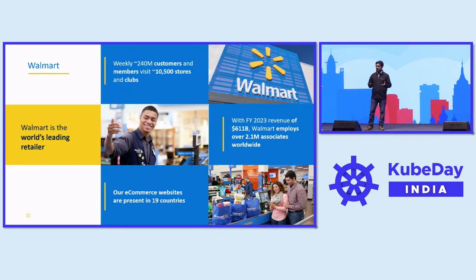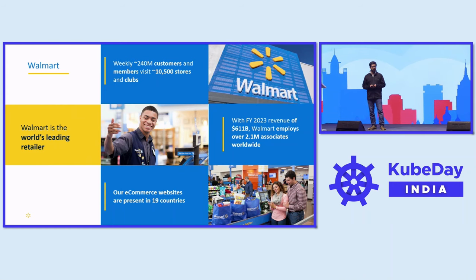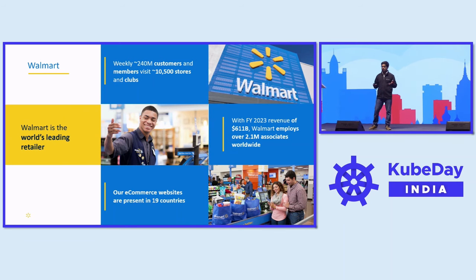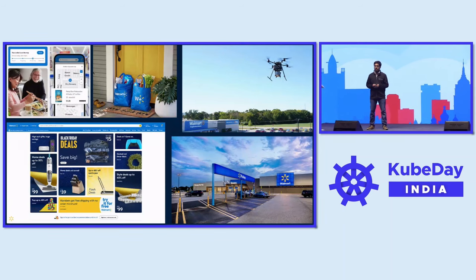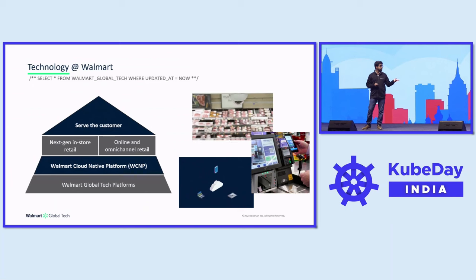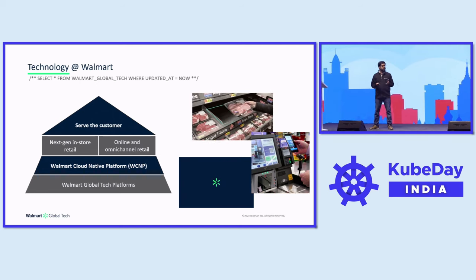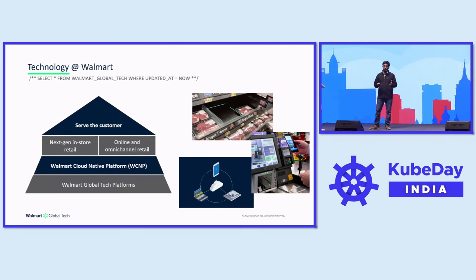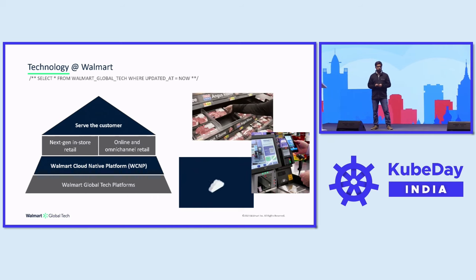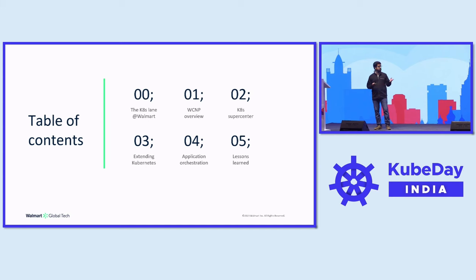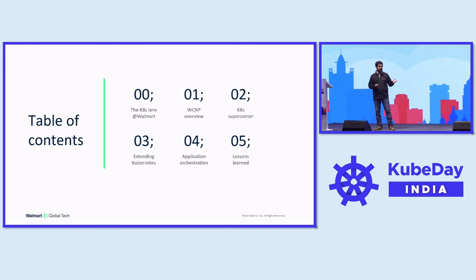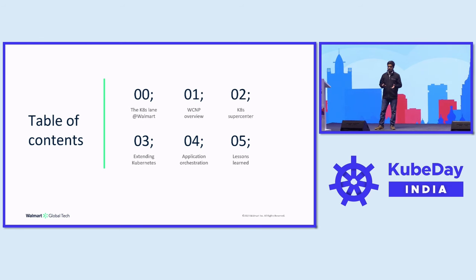Whenever any of us think of Walmart, we think of the world's largest retailer. We think of thousands of stores, some of them mega stores. We also think of new age commerce — online and omnichannel commerce — and next generation in-store retail. A majority of these applications are built and run on the Walmart cloud-native platform, which is what I'm going to talk to you about today. We'll go over an overview of the platform and then dive into how we've extended Kubernetes and managed application orchestration across the platform.